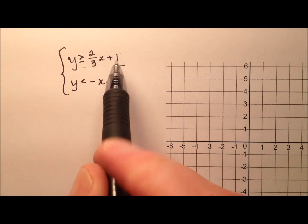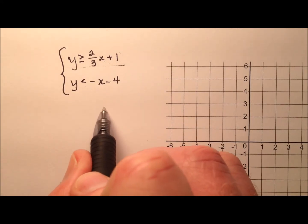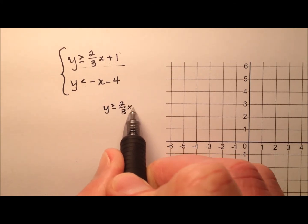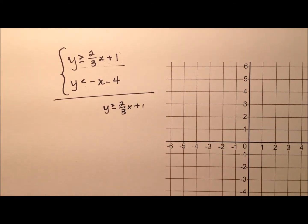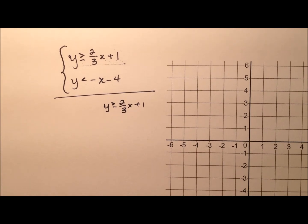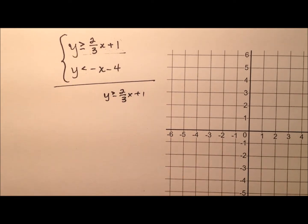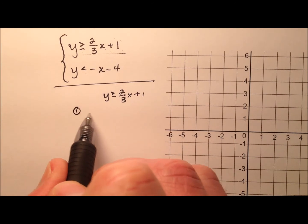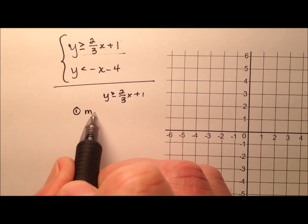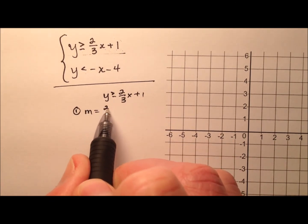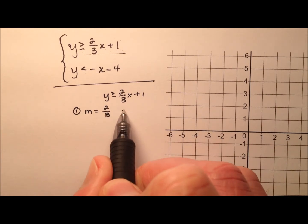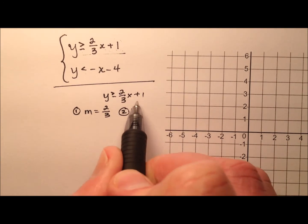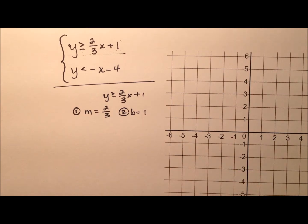So let's go ahead and start with our first line: y is greater than or equal to 2 thirds x plus 1. In order to graph these linear inequalities, we kind of need four pieces of information. The first one is the slope, and the slope in this case is 2 thirds. The second piece of information is the b value or the y-intercept, and that's 1.